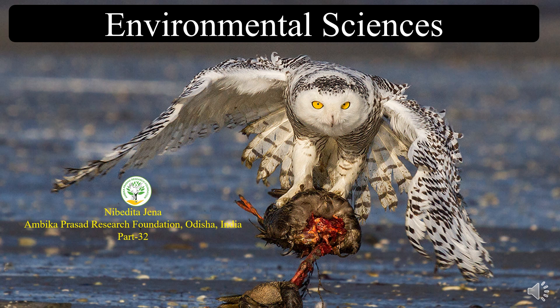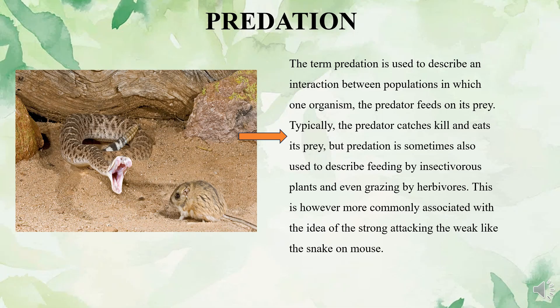So what is predation? The term predation is used to describe an interaction between populations in which one organism, the predator, feeds on its prey. Typically the predator catches, kills and eats its prey, but predation is sometimes also used to describe feeding by insectivorous plants and even grazing by herbivores.